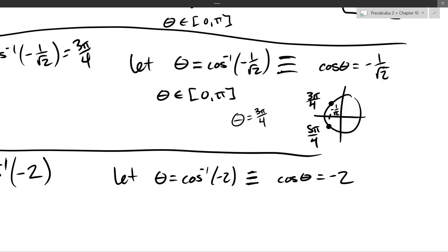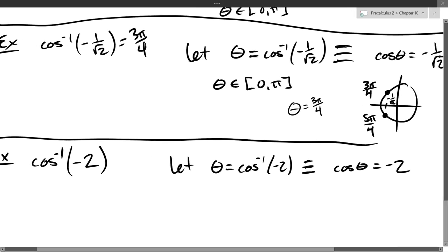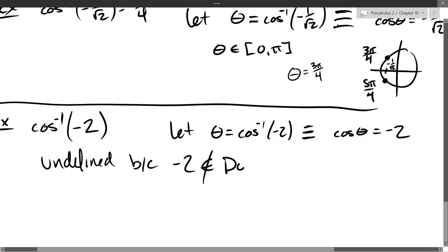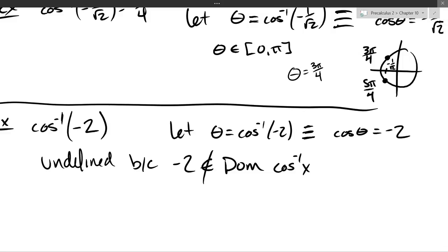What is wrong with cosine inverse of negative two? We're outside the values that cosine inverse can input. The domain of cosine inverse is negative one to one — negative two is too far negative. So cosine inverse of negative two is undefined, because negative two is not in the domain of cosine inverse.